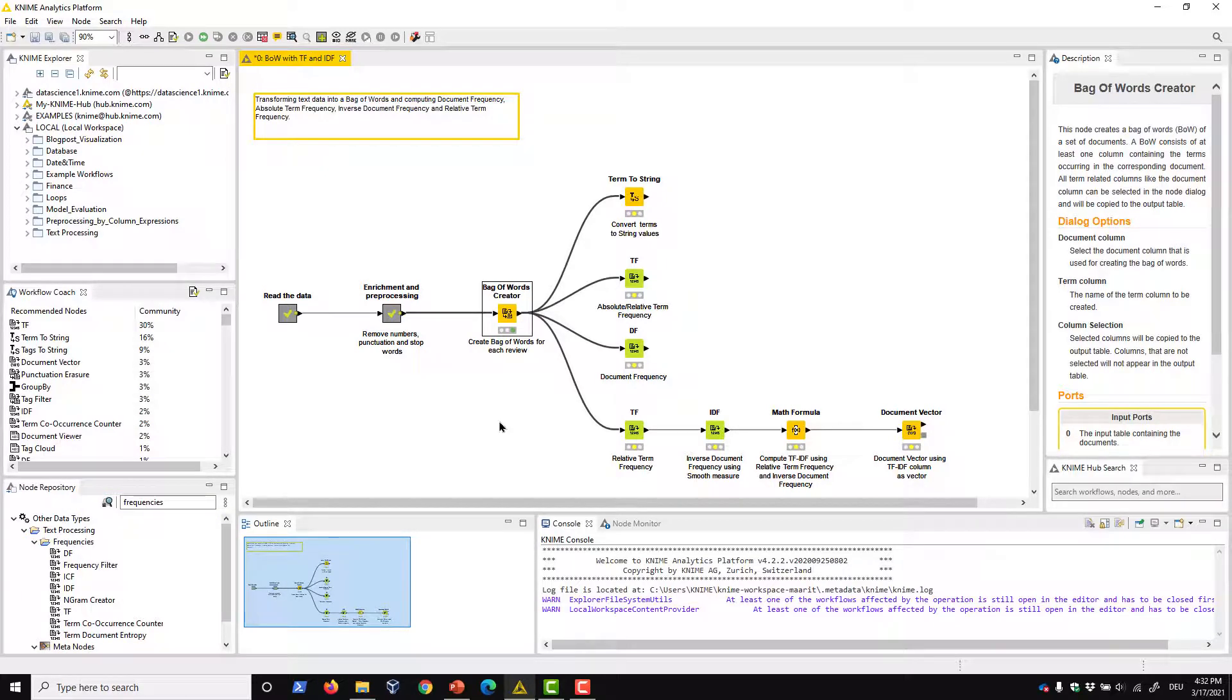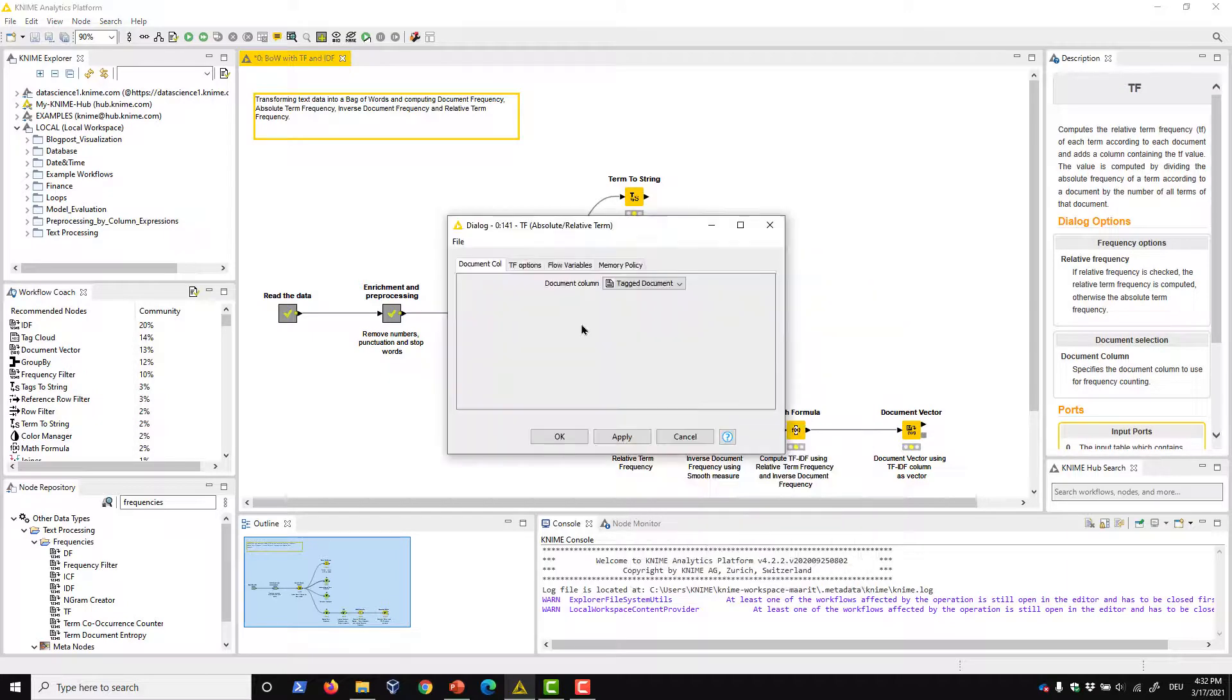You can find the nodes for calculating different types of frequencies in the frequencies subcategory in the node repository. Here we'll take a look at the TF, DF, and IDF nodes. All three nodes have a similar configuration dialog. In the first tab, we select the document column for calculating the frequencies. In the second tab, we define the type of the frequency measure more specifically.